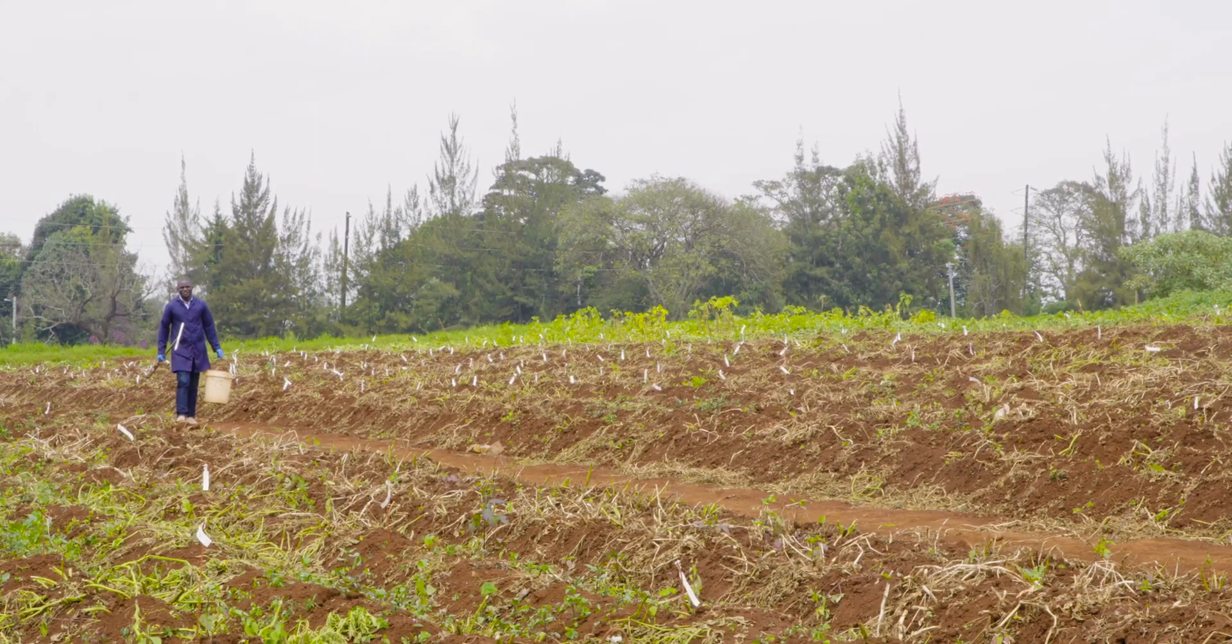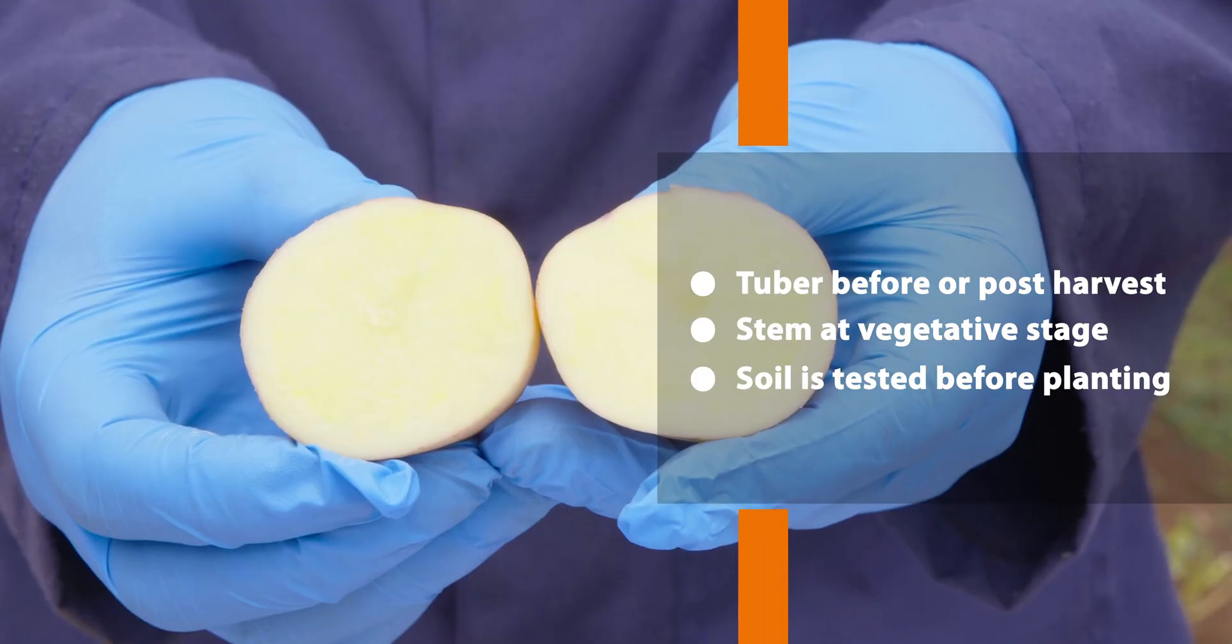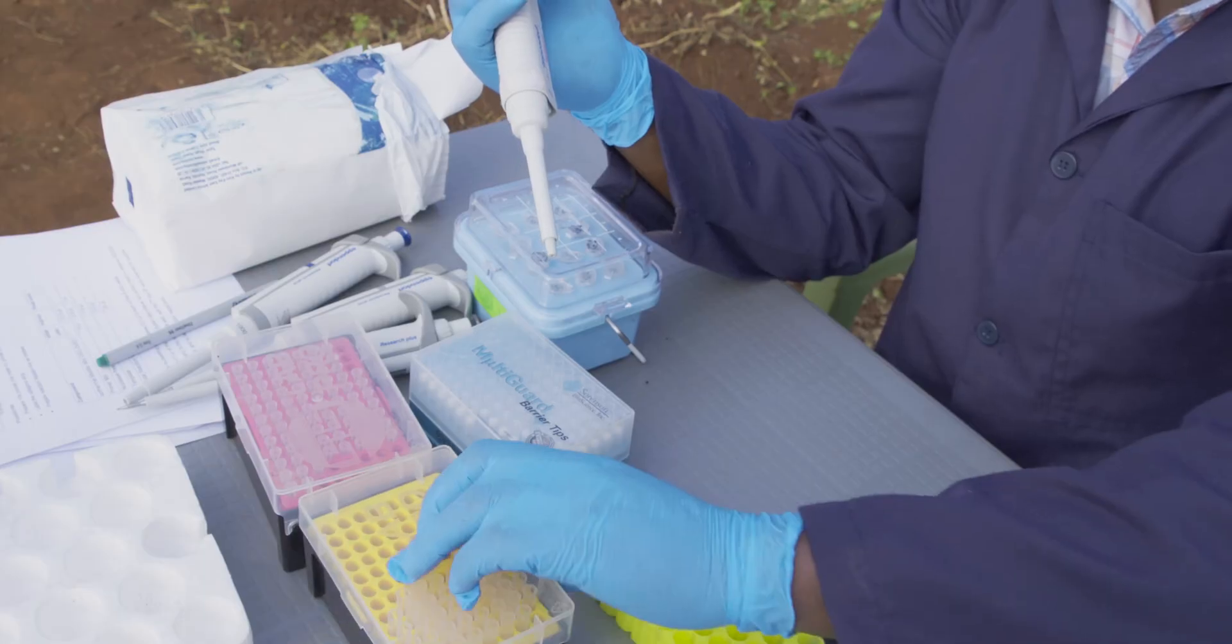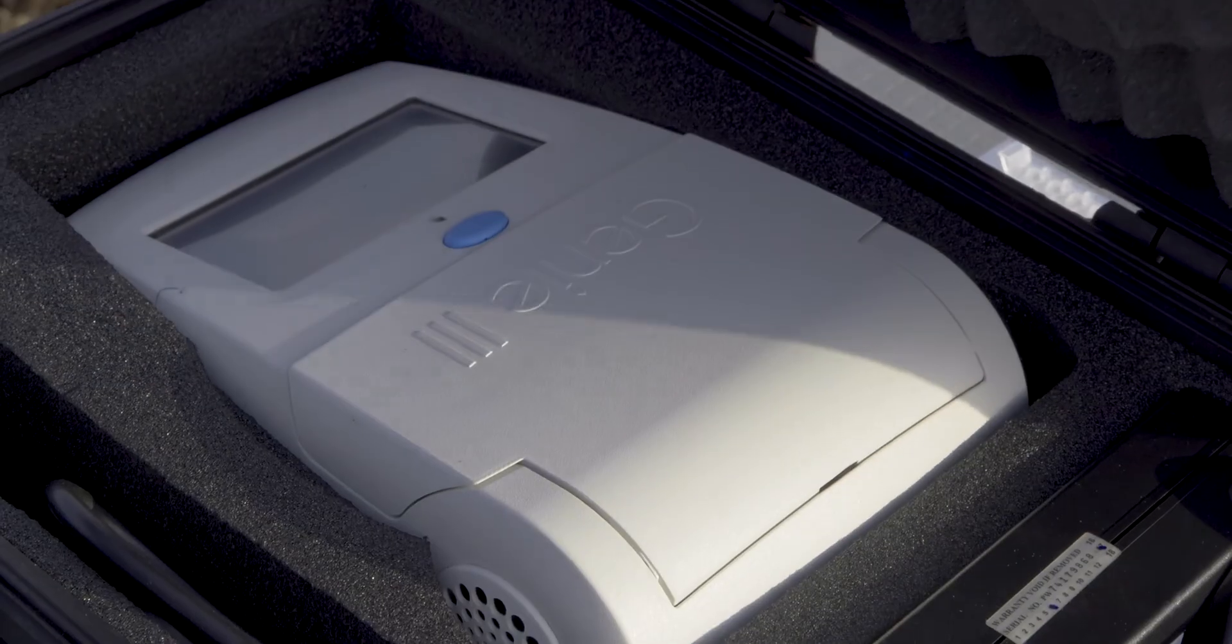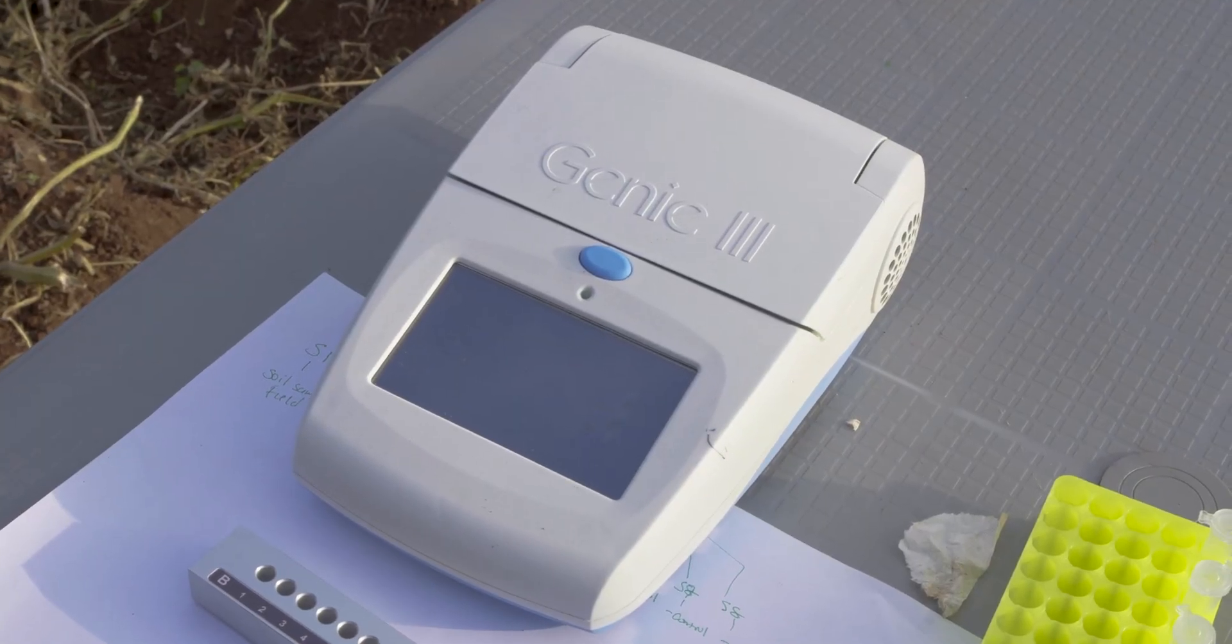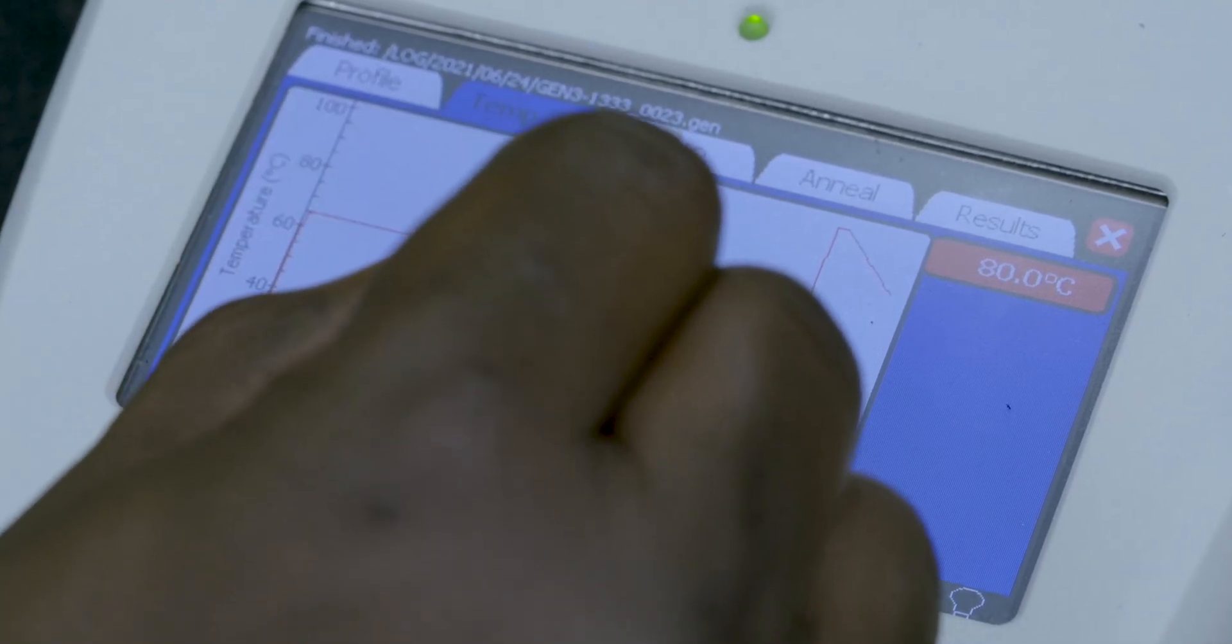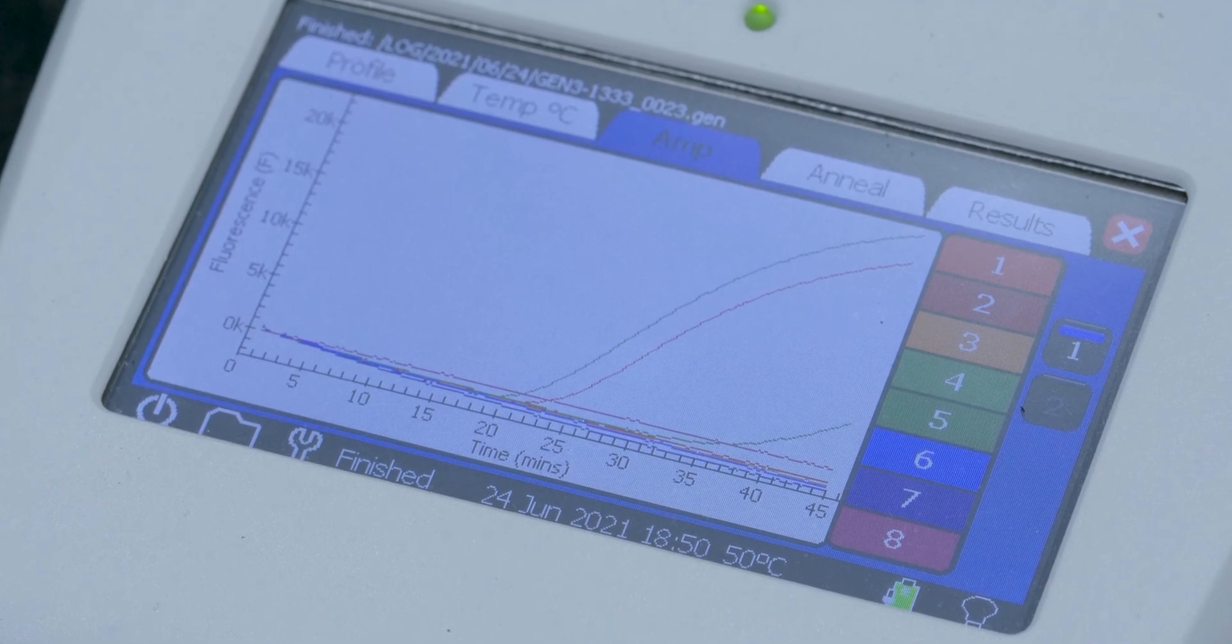The field deployable LAMP assay is a diagnostic assay that detects Ralstonia from stem, tuber and soil samples without extensive resources. LAMP assay is a novel nucleic acid amplification method that amplifies DNA with high specificity, efficiency and rapidity under isothermal conditions. It uses four to six specially designed primers to recognize six to eight distinct regions on the target DNA template with amplification at constant temperature.